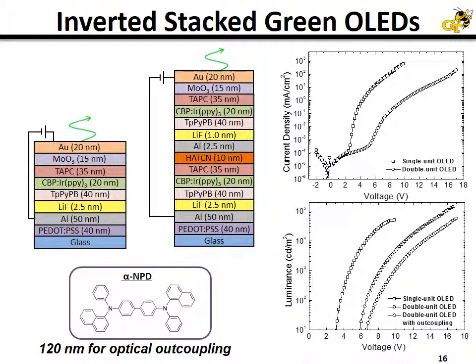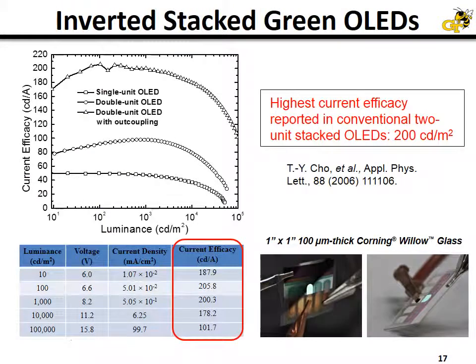In the stacked OLED case, we also added — in a third device — an optical outcoupling layer of 120 nanometers of a material known as α-NPD to get additional light extracted from the device. Here you can see the current efficacy values plotted versus luminance.